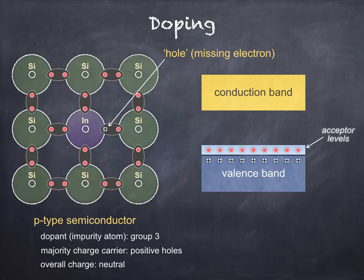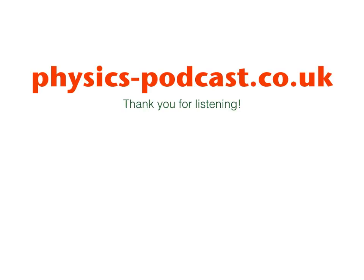So that's us for now. In the next lesson, I'll be discussing the formation of a p-n junction and how it performs when forward or reverse biased. The third lesson will cover applications such as the LED and solar cell — make sure to watch them too. For more information on upcoming videos, summary sheets and so on, visit physics-podcast.co.uk. Thank you for listening.